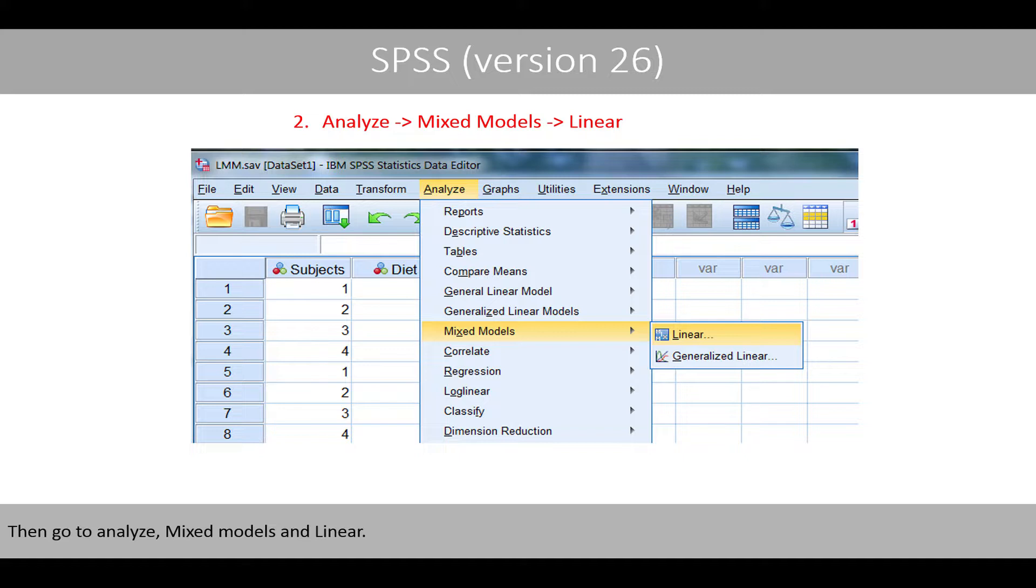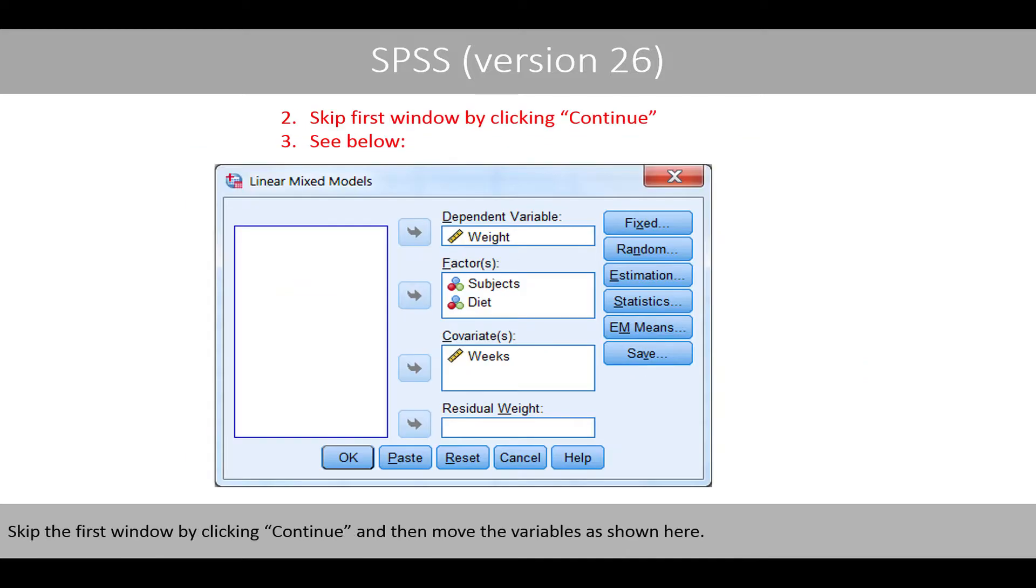Then go to Analyze, Mixed Models, and Linear. Skip the first window by clicking Continue, and then move the variables as shown here.